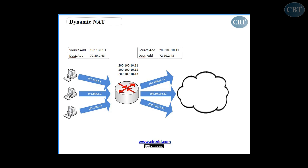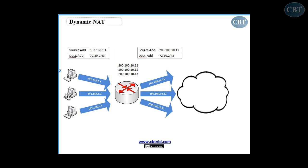Next, we have Dynamic NAT. In Dynamic NAT, the concept is almost the same. Again, you have your local network on the left side, and you have the internet on the right side, and here on your local network, you have private addresses. But the difference with Static NAT is this one.